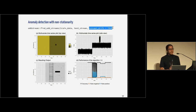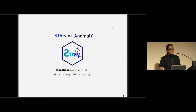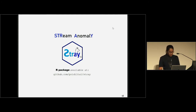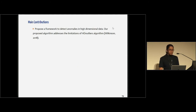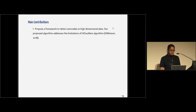That is the basic idea of the first package, Outstream. With that, I'm coming to the second package, Stray Anomaly. This is also a very young package, so you can have access to the development version through my GitHub account. Again, we have done two main contributions. First, we propose a framework to detect anomalies in high dimensional data — basically, our proposed algorithm tries to address the limitations of the HD outlier algorithm.